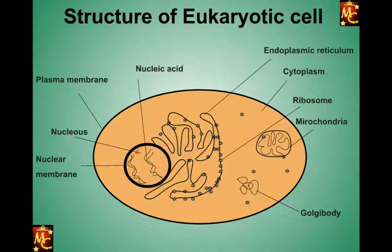The nucleus contains DNA, which makes up the chromosomes. Chromosomes are responsible for transferring parental characteristics to the next generation. Just connected to the nucleus, there is a structure with finger-like extensions.